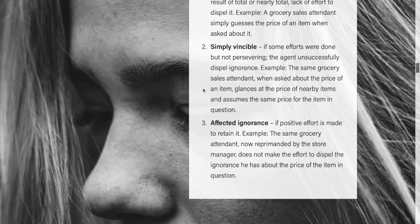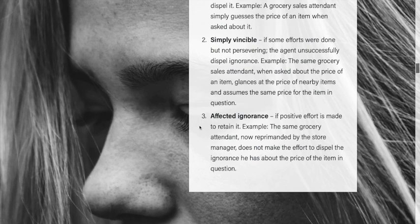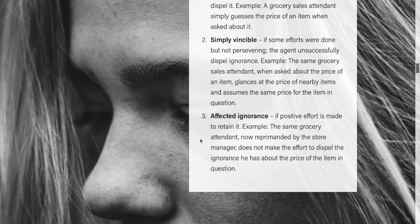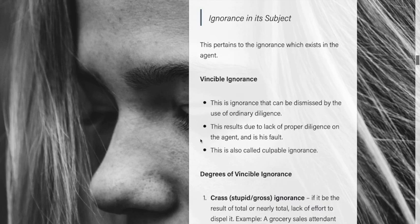The third degree is affected ignorance: positive effort is made to retain such ignorance, meaning there is an intentional effort to keep oneself ignorant. For example, the grocery attendant, even after being reprimanded by the manager, does not make the effort to dispel the ignorance about the price of the item — positively and intentionally retaining that ignorance. These three degrees are types of vincible ignorance.